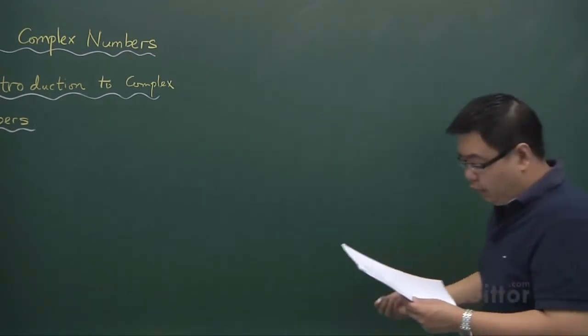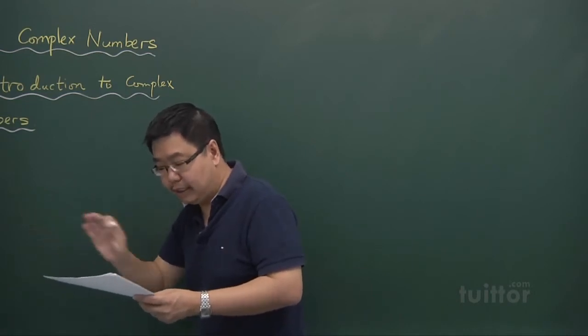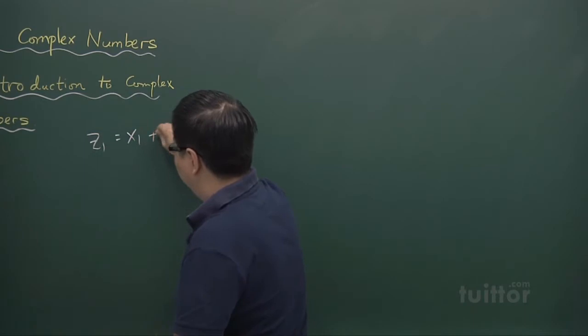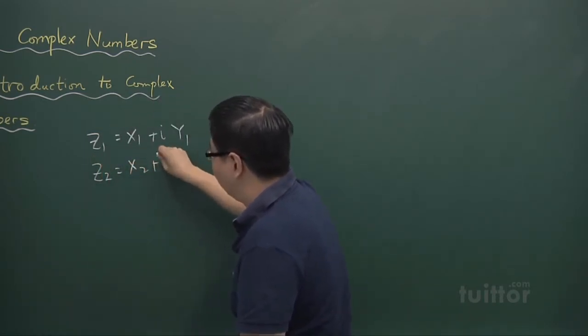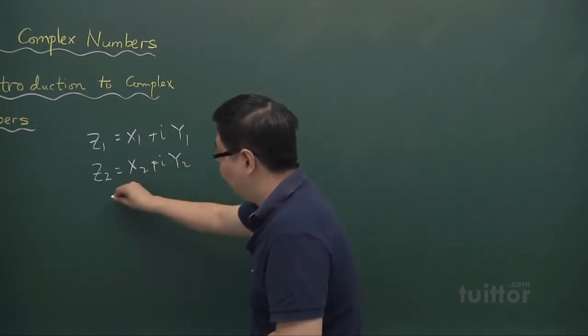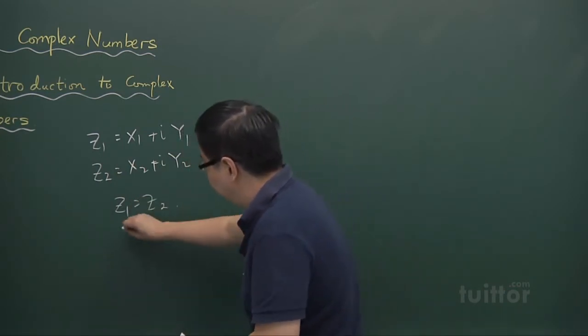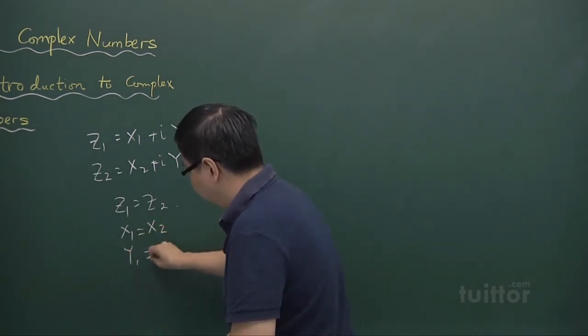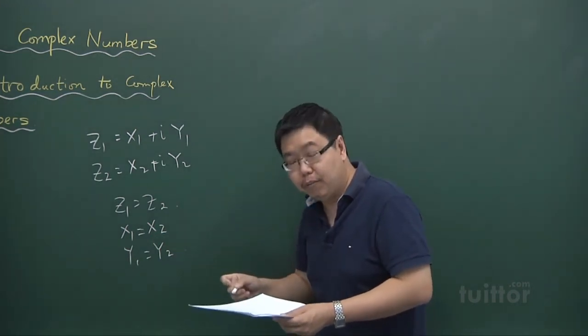For two complex numbers, they are equal if the real and imaginary parts are equal. So that means if I have z1 equals x1 plus iy1 and z2 equals x2 plus iy2, if you say that z1 and z2 are equal complex numbers, that means that x1 equals x2 and y1 equals to y2. So real parts must be equal and the imaginary part must be equal for both numbers.